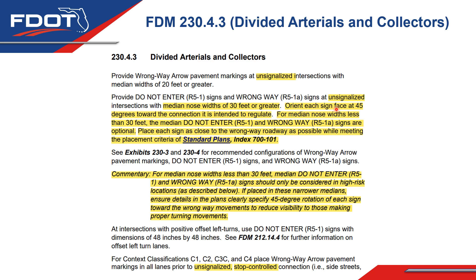It was also decided to orient each sign face at 45 degrees towards the connection that it is intended to regulate. For median nose widths less than 30 feet, the median do not enter and wrong way signs are optional. Each sign will be placed as close to the wrong way roadway as possible while meeting the placement criteria in the standard plans. Commentary was added making clear that the reason signs may not be included for narrow medians is to eliminate driver confusion, and that these should only be placed at high risk locations with plans clearly specifying a 45-degree rotation. Clarifications were also made about unsignalized versus signalized locations.